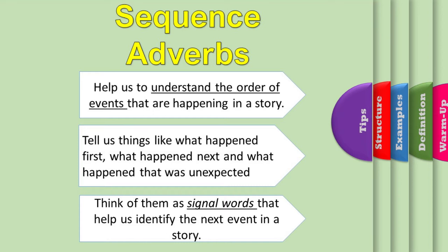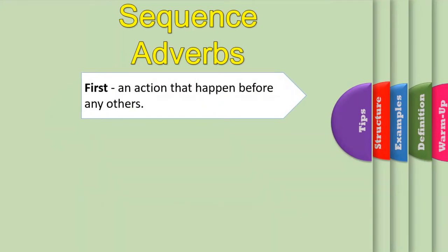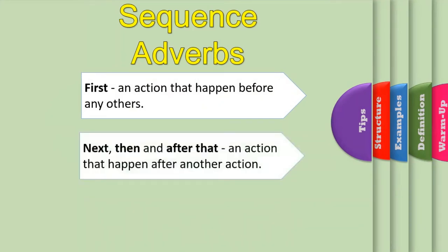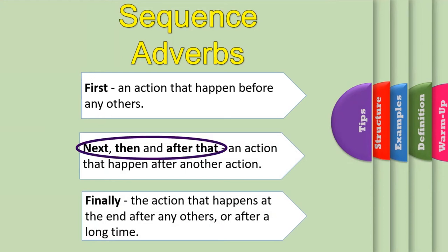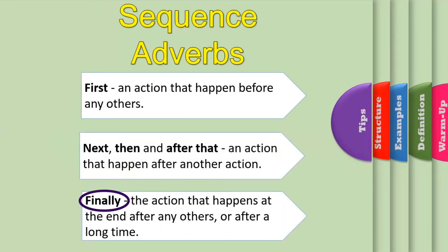The sequence adverbs that aid the right order of events in a story are: first, next, then, after that, and finally. We use the sequence word 'first' for an action that happened before any others. Then, 'next' and 'after that' can be used for an action that happened after another action — these three sequencers can be used interchangeably. The sequence word 'finally' is used for the action that happened at the end, after any others, or after a long time.